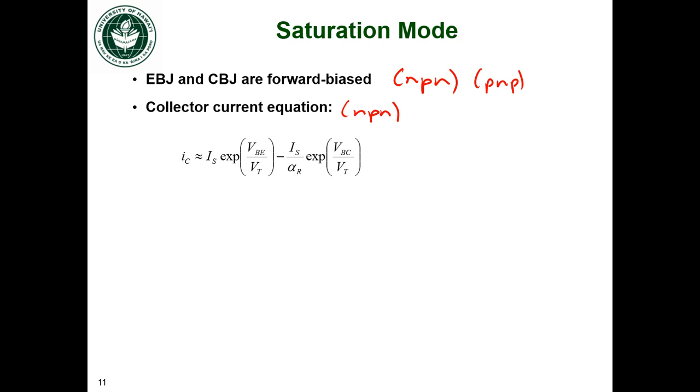So our collector current equation will look like this. The first part of it is the same as in forward active, but we have the second term because the collector base junction is now forward biased and that's going to reduce the collector current by a little bit as compared to forward active mode.